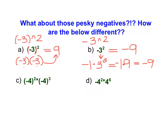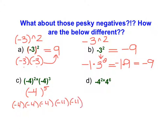If we see parentheses — for example in part C — the parentheses communicate that we are taking negative 4 times itself 5 times: negative 4 times negative 4 times negative 4 times negative 4 times negative 4. Using a calculator, negative 4 in parentheses raised to the power of 5 equals negative 1,024.